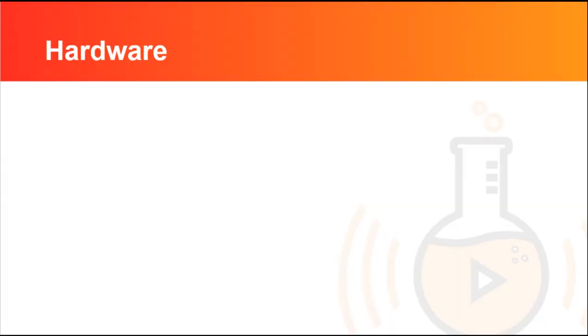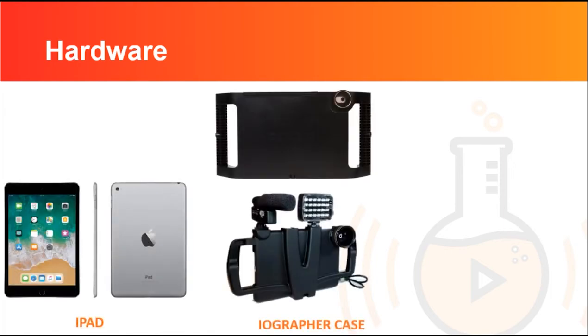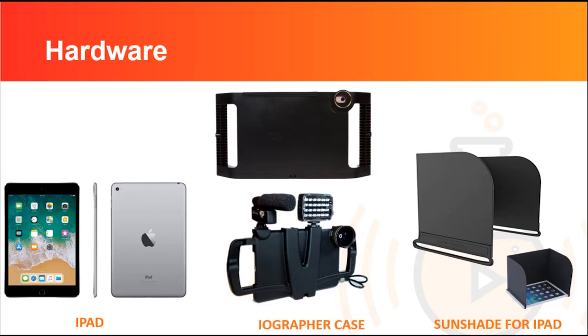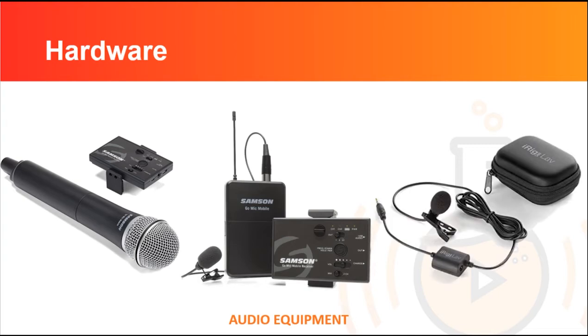The following hardware are essential to ensuring a quality EFT production. These hardware will ensure the EFT has quality audio, sound and streaming. You will need an iPad, an iographer case which allows the user to create professional looking video content by adding tripods, lenses and other accessories. A sunshade for iPad to shield the iPad screen from the glare of the sun and different audio accessories to ensure quality audio.